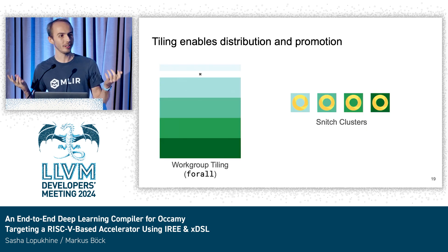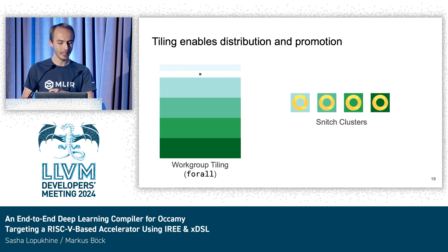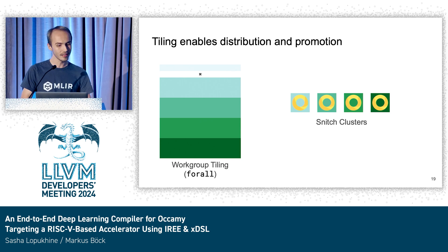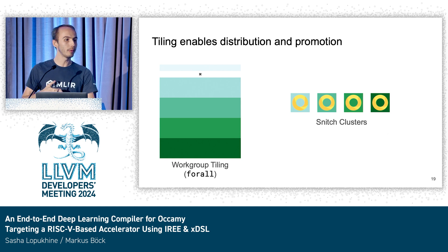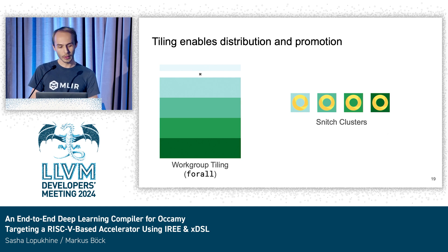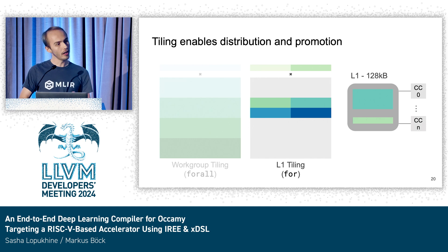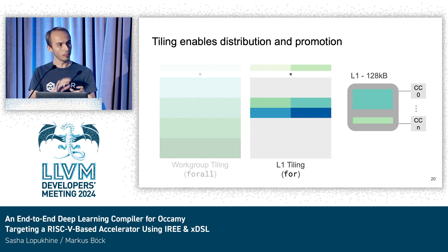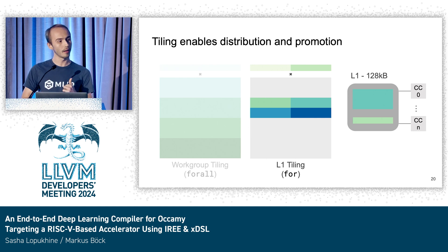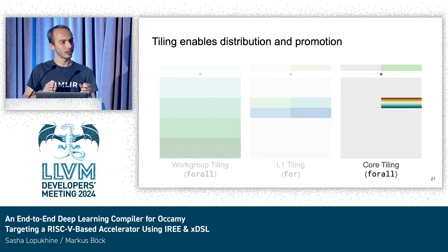The most important optimization is tiling, and we need it for two reasons. First, for distribution — at the work group level, we distribute the work of a single matrix-vector multiply among multiple Snitch clusters. When inside a single Snitch cluster, we need to care about memory use: for our streaming registers to work, our working set has to be in the L1 memory next to the Snitch cluster. We do a temporal tiling of the work group down to 128 kilobytes, and then distribute that single tile's work among our eight compute cores.